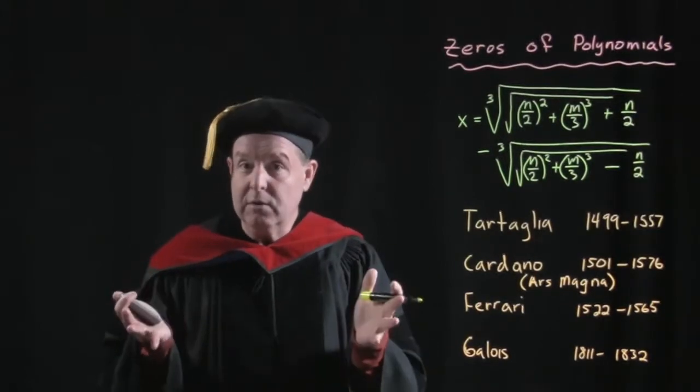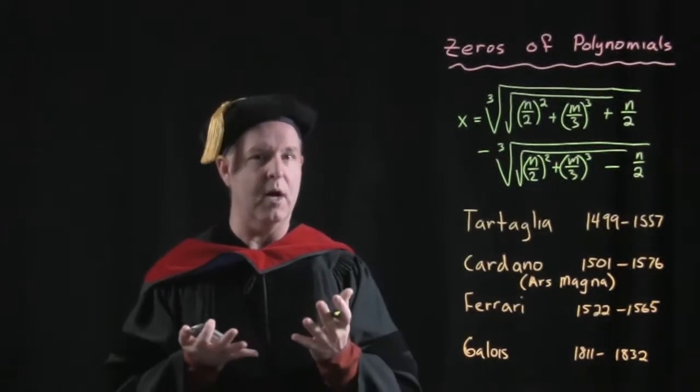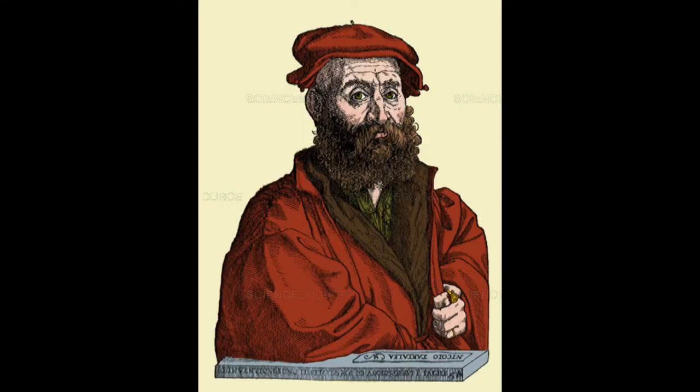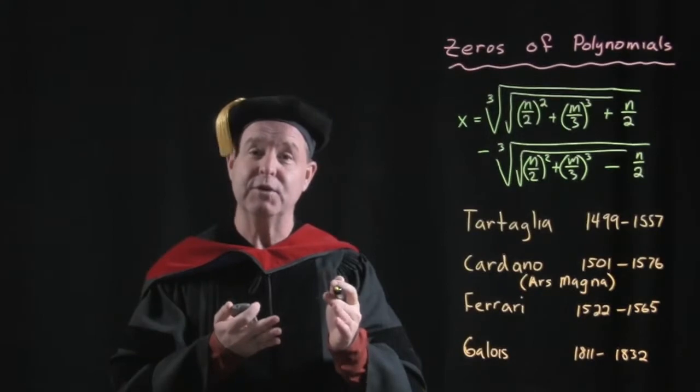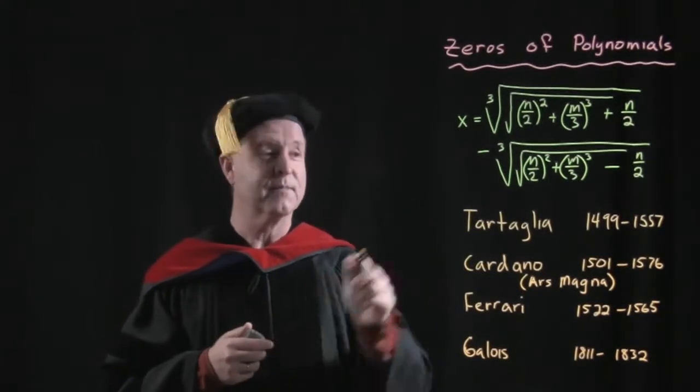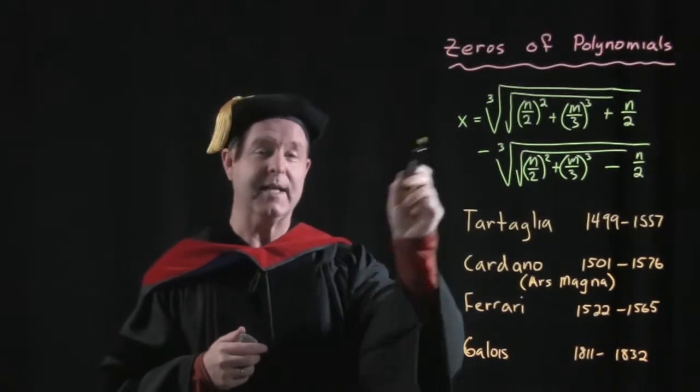In fact, once you find a solution of something like that, it's something you want to hold on to for your life. 500 years ago, Tartaglia was a person that found a root, a solution, or a zero to a third degree polynomial. And here is his formula that he was able to derive.